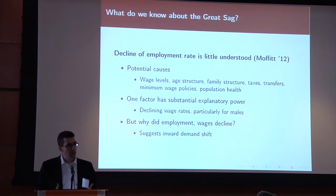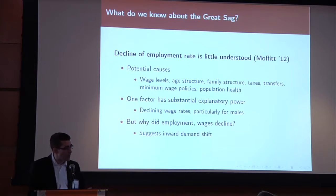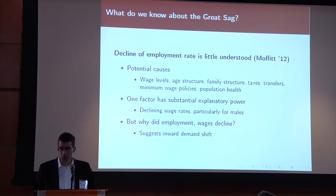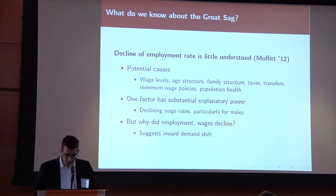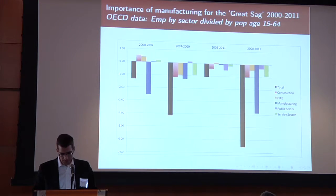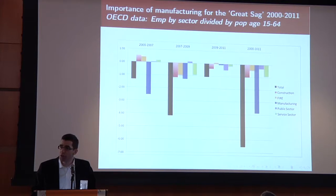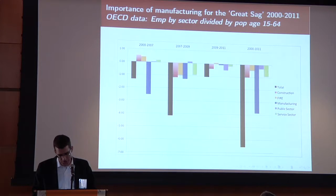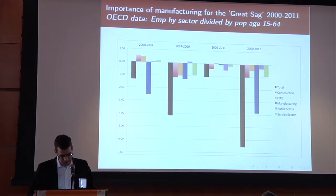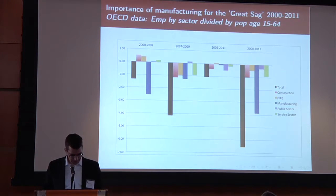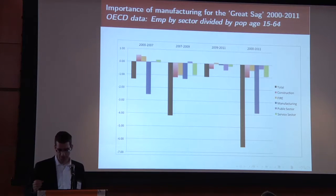If wages are falling, then the question is why do we see this joint decline in wages and employment? In this paper, we first looked at some disaggregation of employment-to-population patterns into the contributions of different industries, something which was interestingly missing in Bob Moffitt's paper.